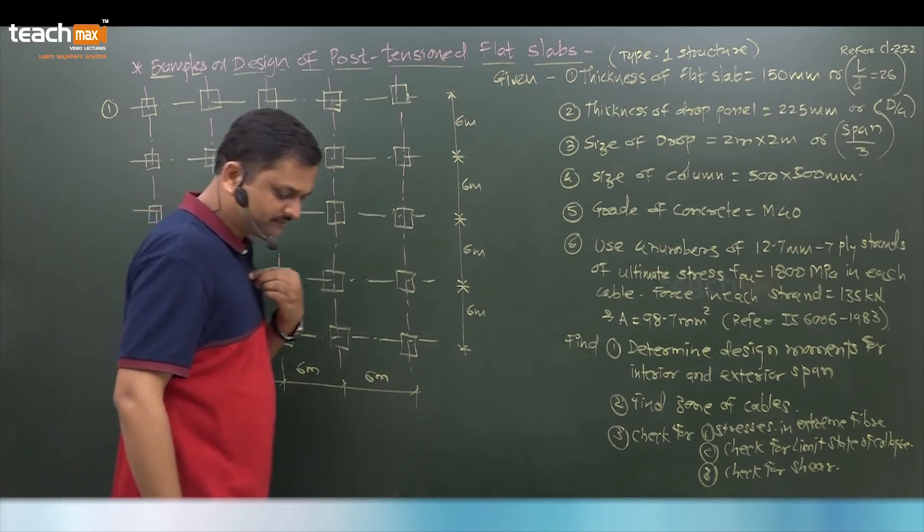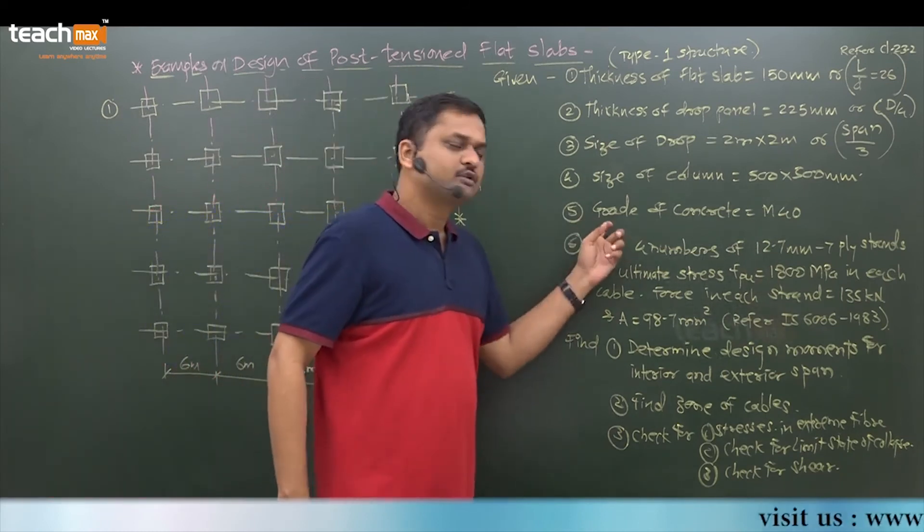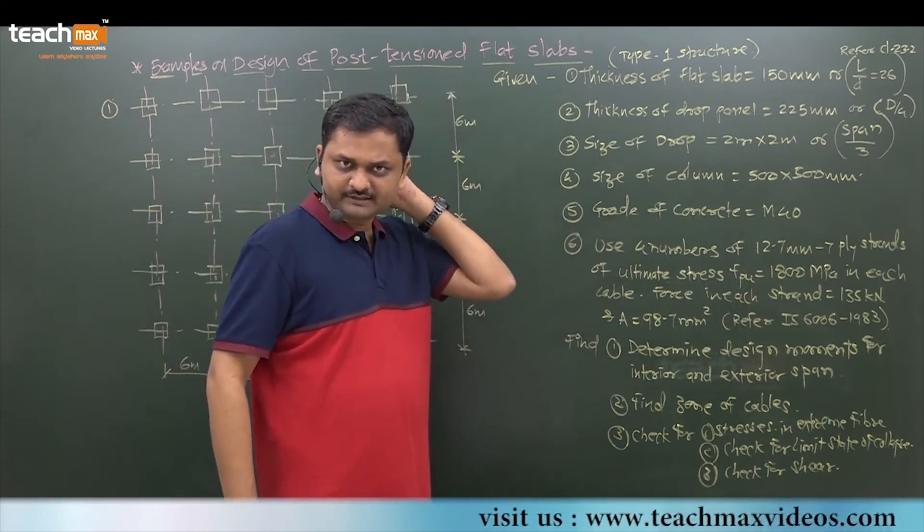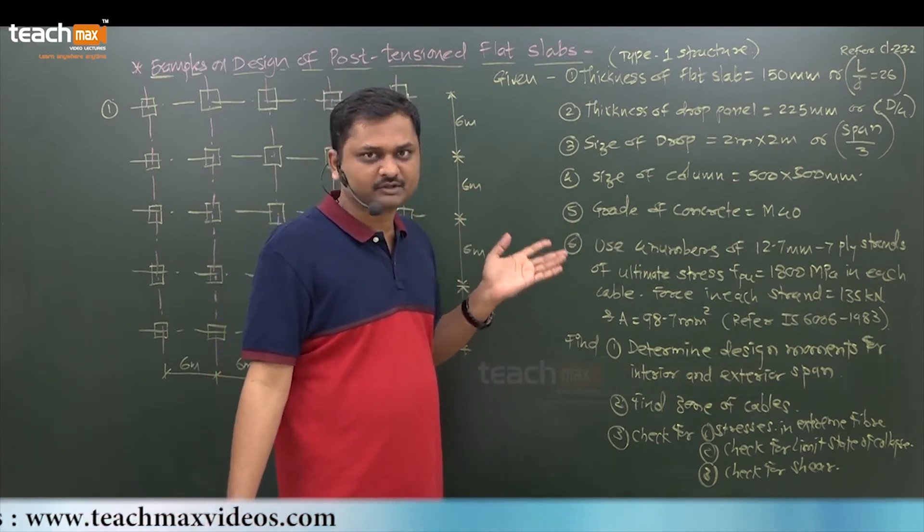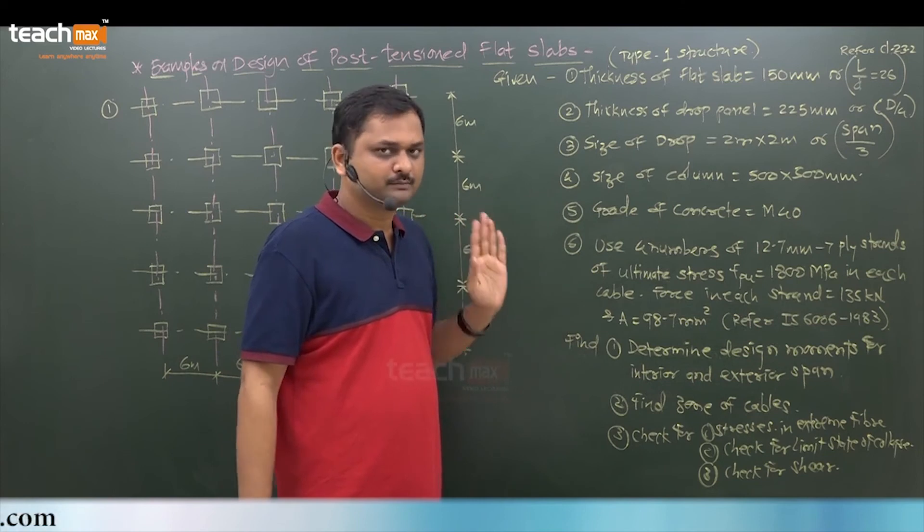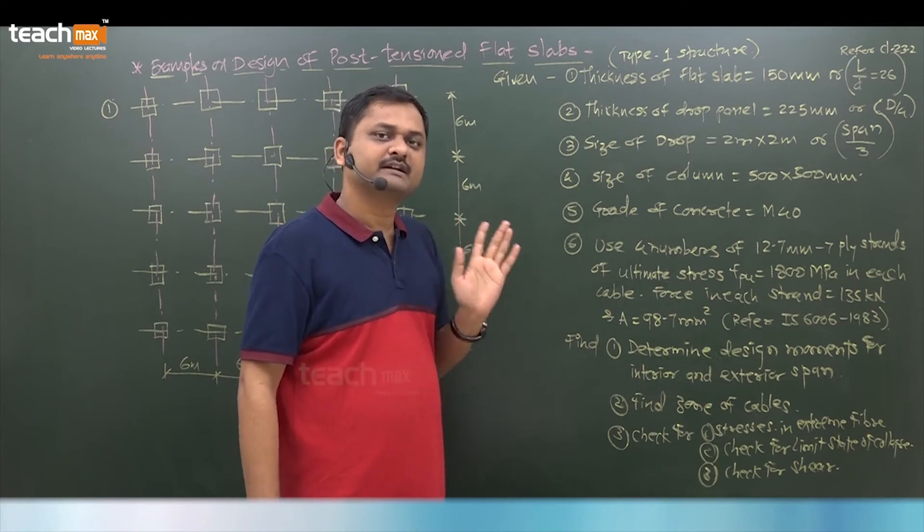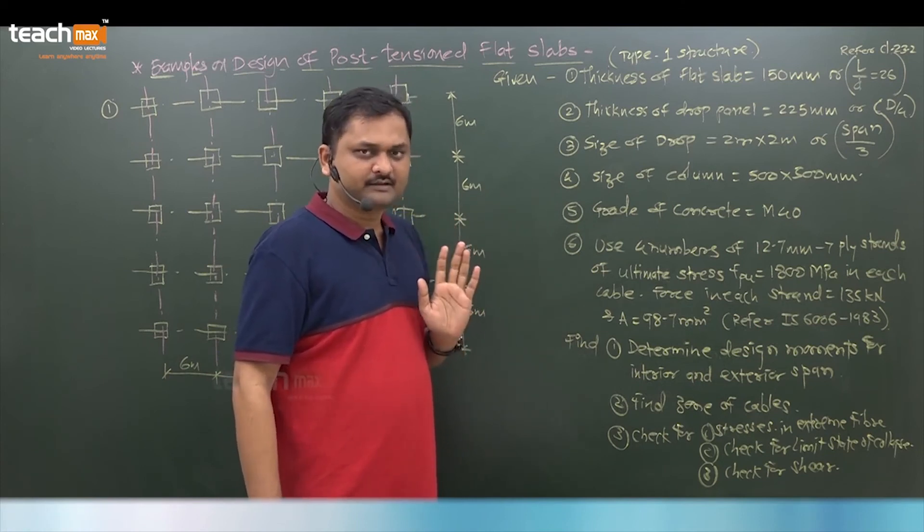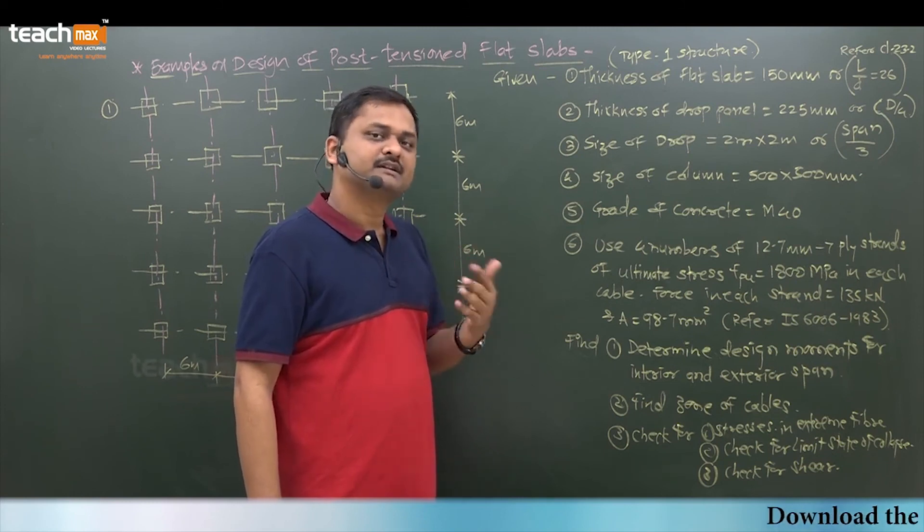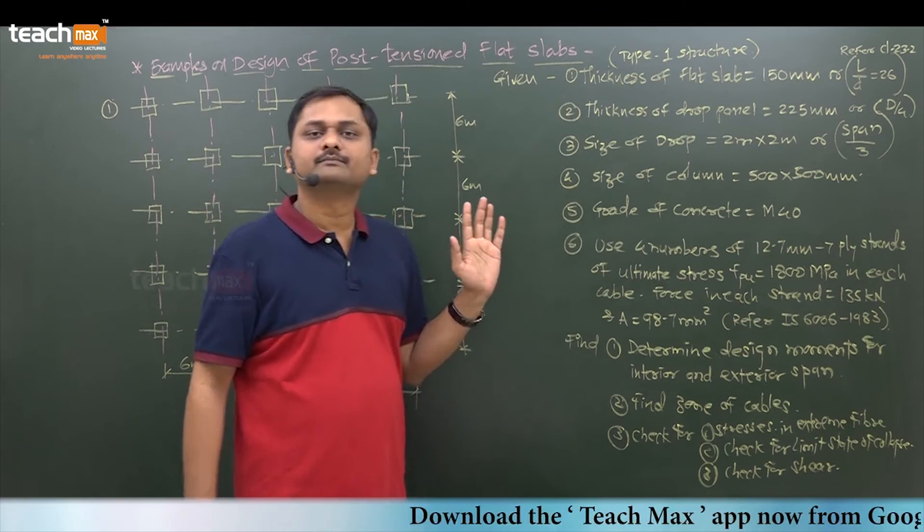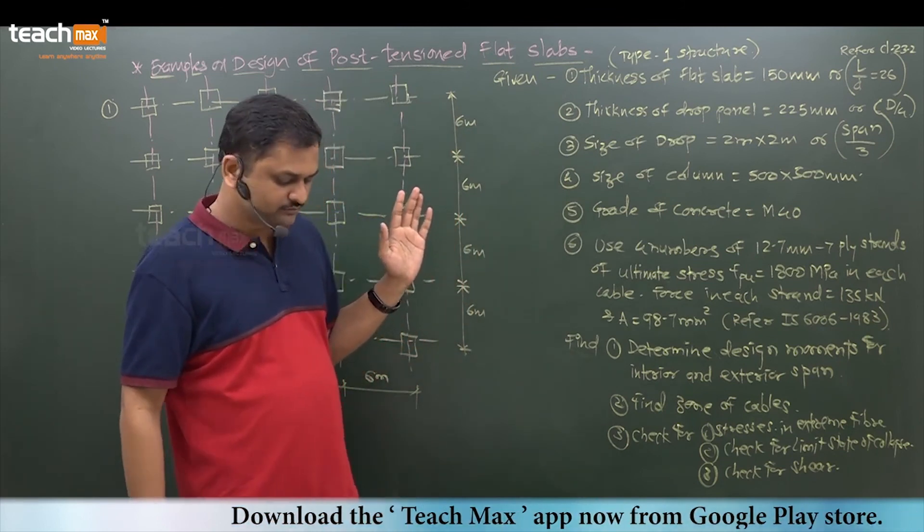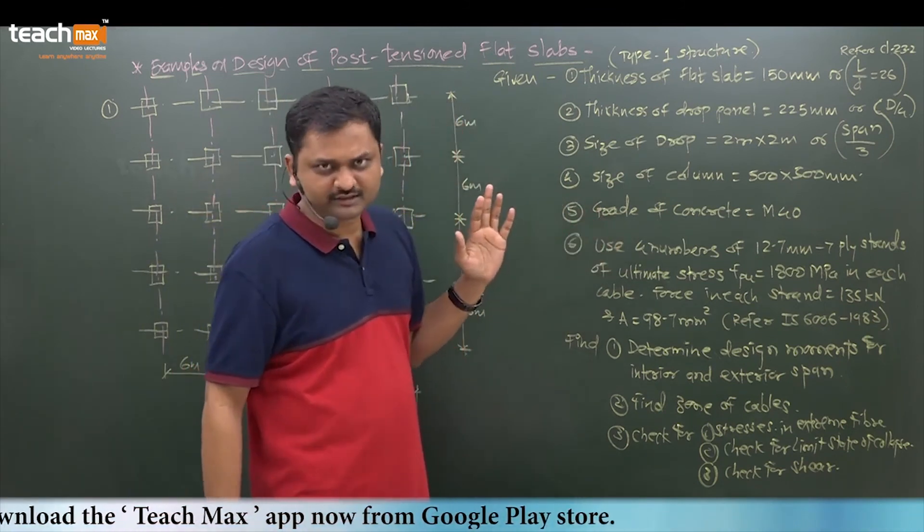After this, grade of the concrete M40 is selected. You can take minimum M30 because this is PT slab. For post-tensioning we know minimum grade we take M30, and for pre-tensioning we take M40. This is post-tension slab, so definitely you can assume more than that also. Here I am considering M40.